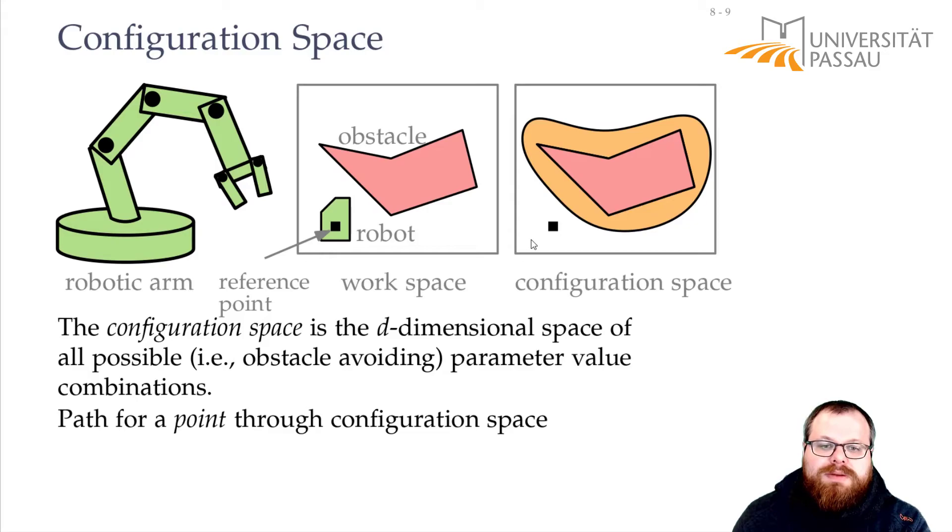And so what we want to do is, we want to find a path for our point through the configuration space. If we can find a path here for a single point, then the robot can move along this path and not hit any obstacles. So we can reduce it to the first simple problem, where we only have point robots.